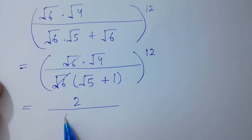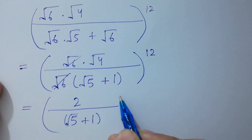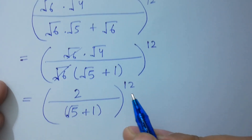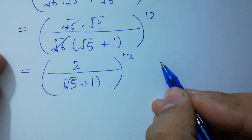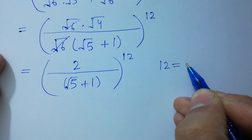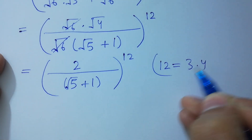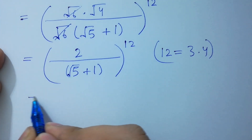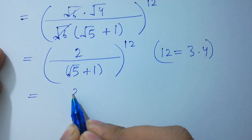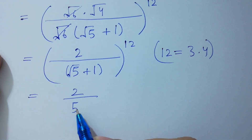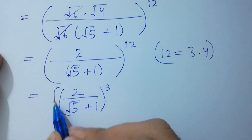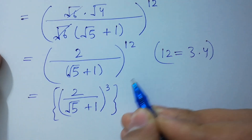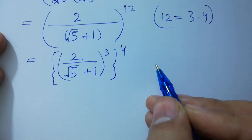We have square root of 4, which is 2 since 2 squared is 4. The square roots cancel, and we have 2 over square root of 5 plus 1, to the whole power 12. Since 12 equals 3 times 4, it equals 2 over square root of 5 plus 1, to the power 3, and then to the power 4.